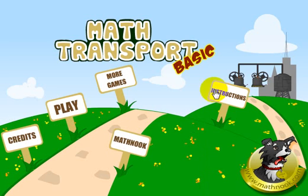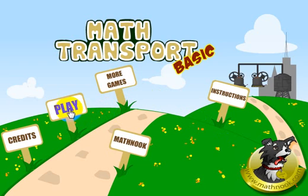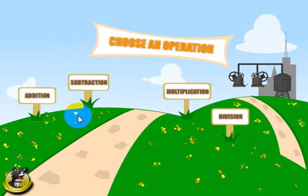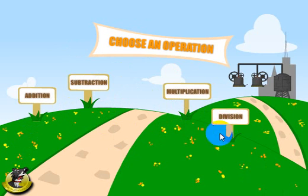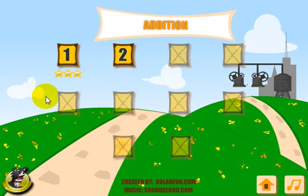When you start up the game, this is what you're going to see. You can click here to see the instructions, then click play. You can choose to play division only, multiplication only, subtraction, or addition. Let's go ahead and look at the addition version.